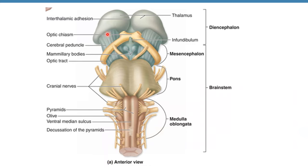In the anterior view of the brain, we can see the midbrain region and the cerebral peduncles. Also visible are the mammillary bodies, which are involved in memory, and the infundibulum, which connects to the pituitary gland. The optic chiasma and optic tracts are also visible from this view. The yellow structures visible here are cranial nerves, which will be discussed in a separate lecture.